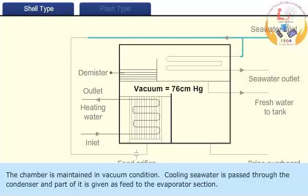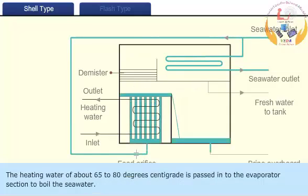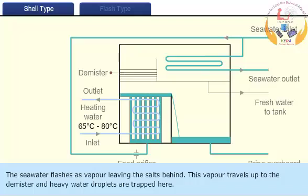Cooling seawater is passed through the condenser and part of it is given as feed to the evaporator section. The heating water of about 65 to 80 degrees centigrade is passed into the evaporator section to boil the seawater. The seawater flashes as vapor, leaving the salts behind.